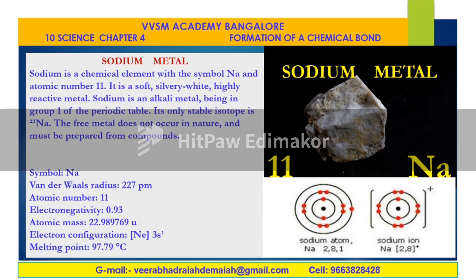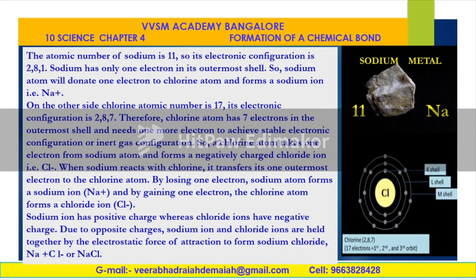Sodium is a chemical element with the symbol Na and atomic number 11. This is sodium metal, having atomic number 11. The electronic configuration of sodium is 2.8.1 — it loses its electrons. When it transfers from one atom to another atom, it gives a sodium plus ion. Sodium has only one electron in its outer shell, so the sodium atom donates one electron — transferring it to the chlorine atom to form a sodium ion.